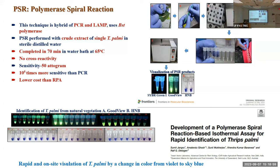Results can be visualized with SYBR Green or GoodView dye under a UV torch, or by a colorimetric dye changing color from dark blue to violet. All positive samples show strong fluorescence while negative samples show none. PSR was not as sensitive as RPA, but still five times more sensitive than normal PCR, and importantly, it is much cheaper than RPA.